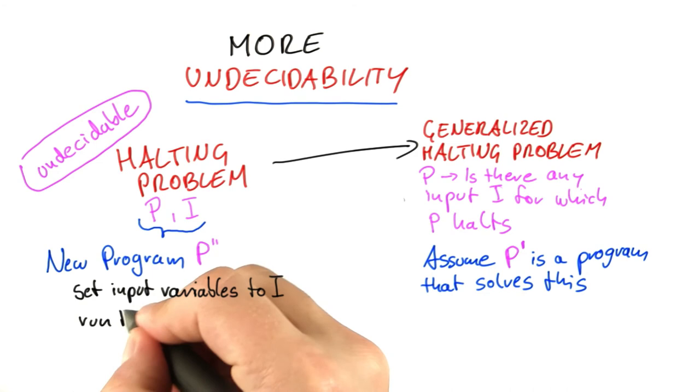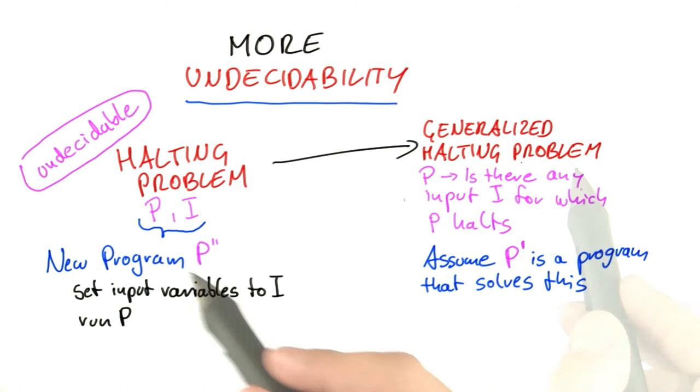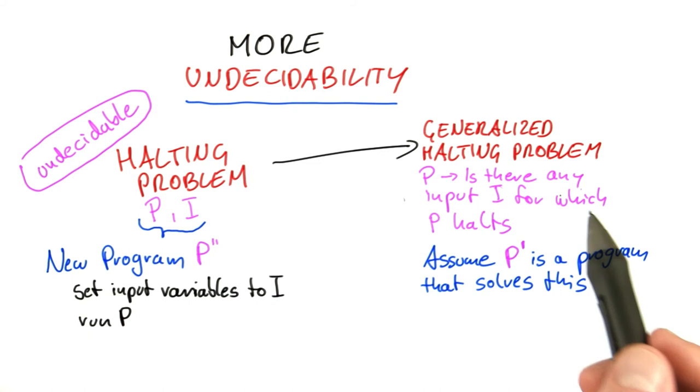So we set the input variables to the input and then run P as always. And now it's clear that if we have a program that solves the generalized halting problem, then we can just feed it this program here because this program here actually ignores any input that we give to it.